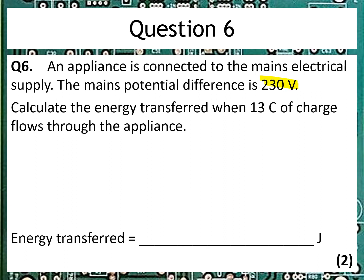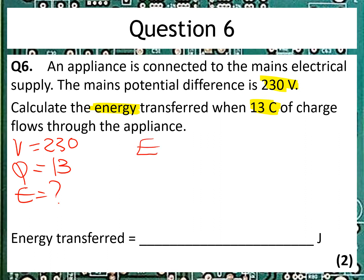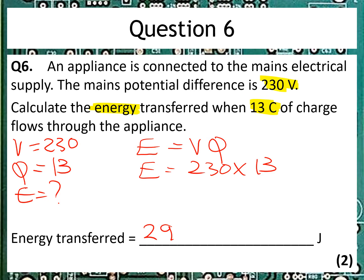So we've got voltage and this time charge in Coulombs, and we're asked to calculate the energy. We've got V is equal to 230 and Q, the charge, is equal to 13. We're trying to find energy, so the equation is E equals VQ. Sticking the numbers in: E is 230 multiplied by 13, which gives us 2,990. And we've already been given the units.